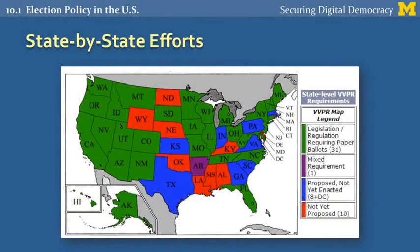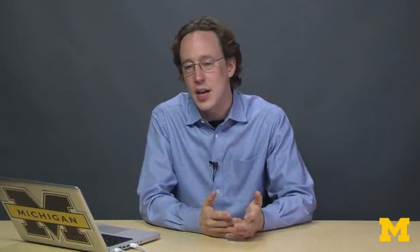Although federal reform is effectively stalled for now, there have been some very successful efforts to improve the state of election security requirements on a state-by-state basis. Due to the efforts of reformers and advocates, 31 states now require some form of voter verifiable paper record to be used in the election process. Unfortunately, there are still 29 states that don't, and for now it looks like it's going to be a state-by-state battle to get requirements like that in place. But since the introduction of an auditable paper record is the most significant kind of improvement we could make to the security of electronic voting systems, I hope efforts like this are going to continue, even if they might be a hard fight.